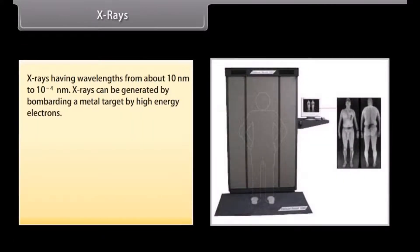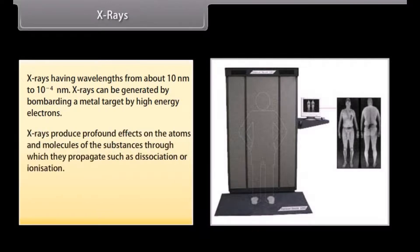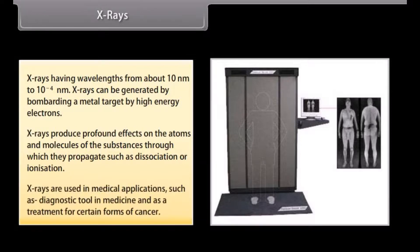X-rays have wavelengths from about 10 nm to 10^-4 nm. X-rays can be generated by bombarding a metal target with high-energy electrons. They produce profound effects on atoms and molecules of substances through which they propagate, such as dissociation or ionization. X-rays are used in medical applications as a diagnostic tool and as a treatment for certain forms of cancer.